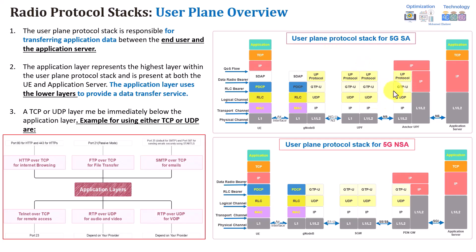The GTP-U tunnel encapsulated packets are then provided over the N3 interface from the gNB, forwarded through the N3 interface which connects the RAN network to the UPF. The UPF is the first entry point of the 5G core network. In summary, the IP packets are transferred through GTP-U. GTP-U uses UDP as its transport layer protocol because it requires very low latency, and retransmission or any packet issues are handled by other layers.